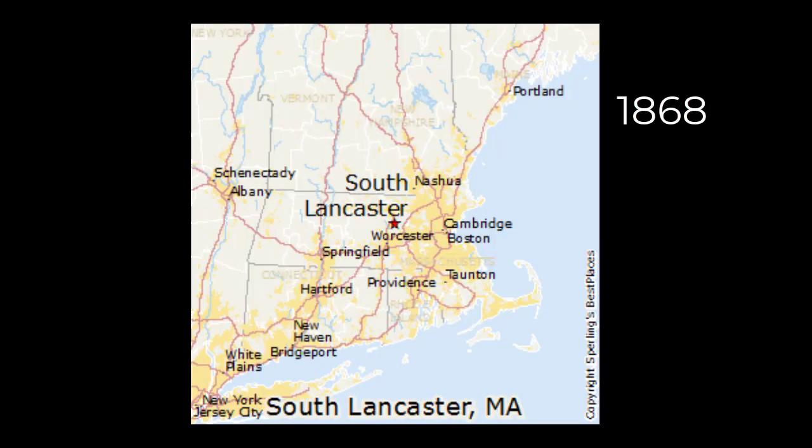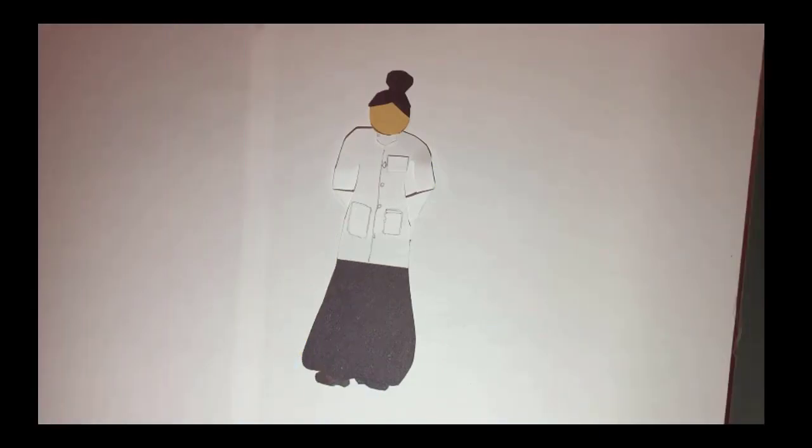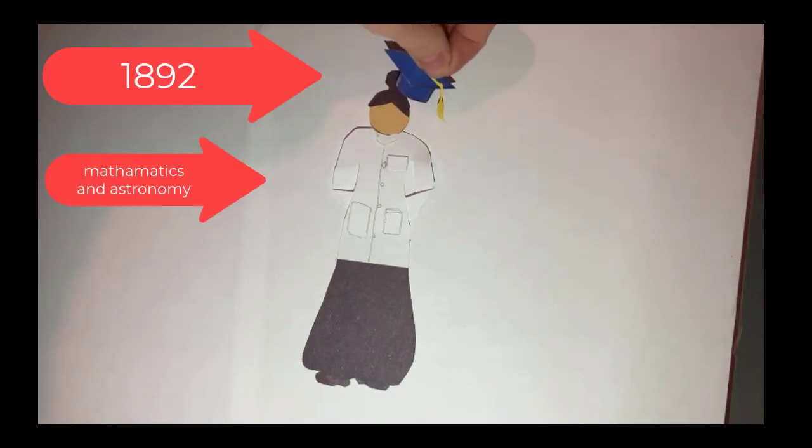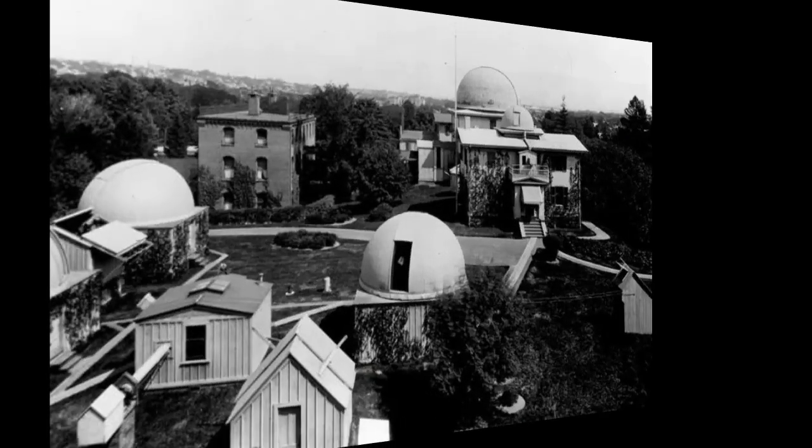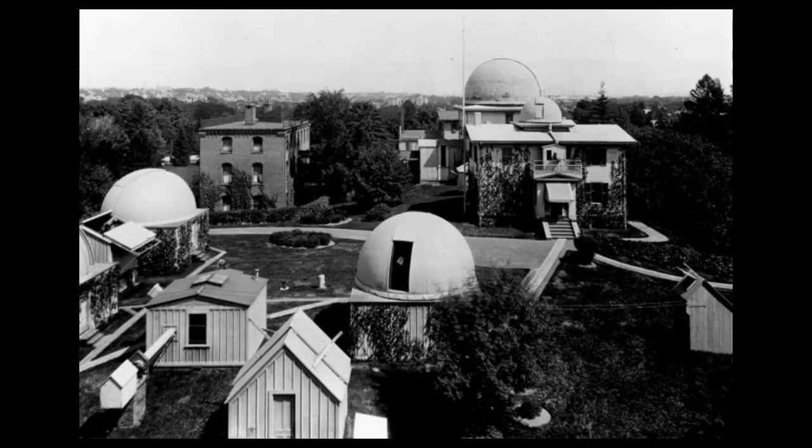Leavitt was born on July 4, 1868 in Lancaster, Massachusetts. She graduated from Radcliffe College in 1892 with studies in mathematics and astronomy. She then became a permanent staff member in 1902 at the Harvard Observatory.